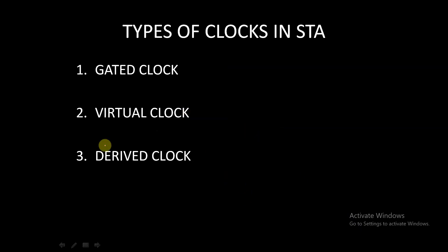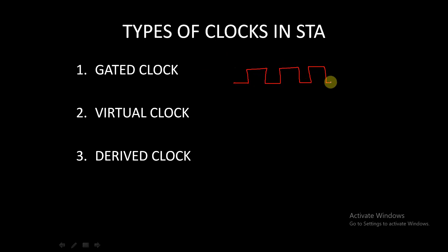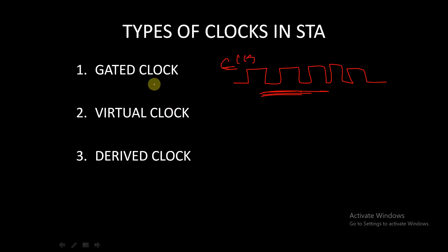In this session we will discuss the types of clocks in STA. Before discussing these, I hope you are all aware of the basic clock. A clock is nothing but a pulse, and with the help of this reference pulse we give our inputs and outputs and analyze all the timing constraints. There are three types of clocks: gated clock, virtual clock, and derived clock.